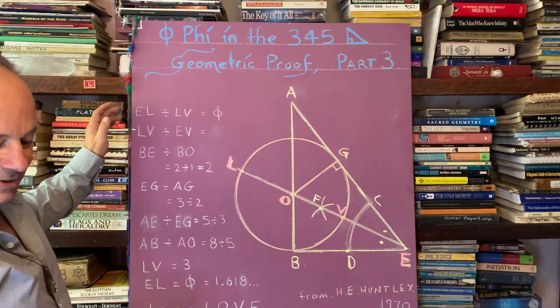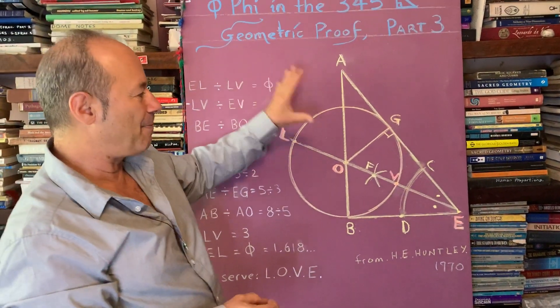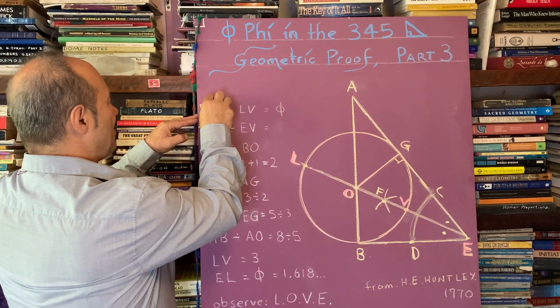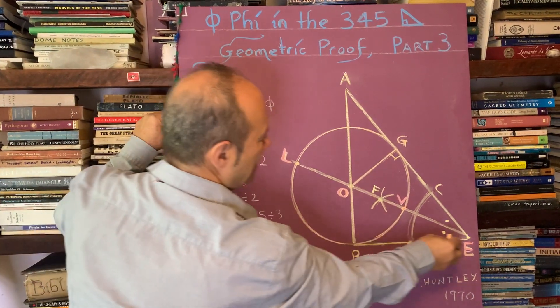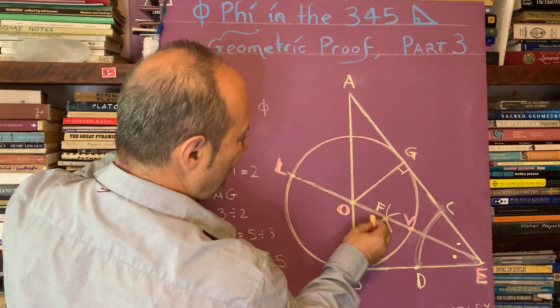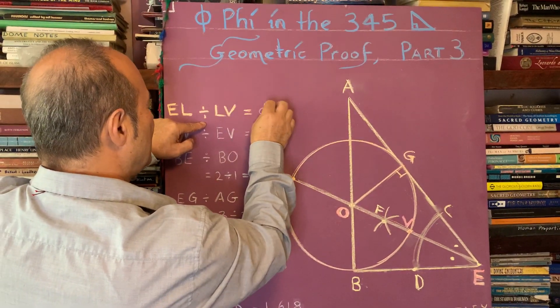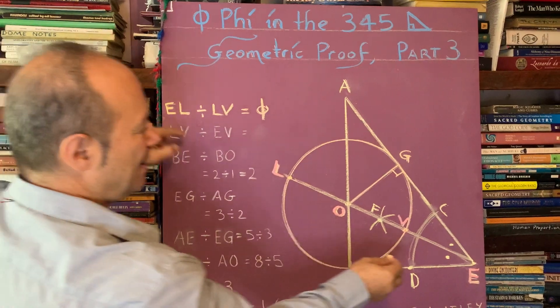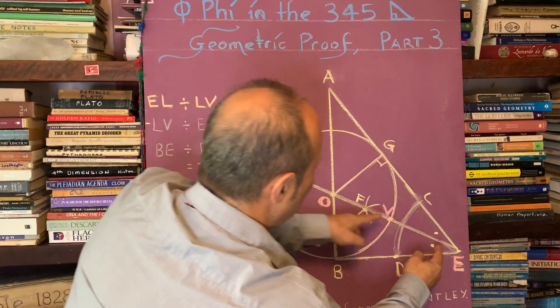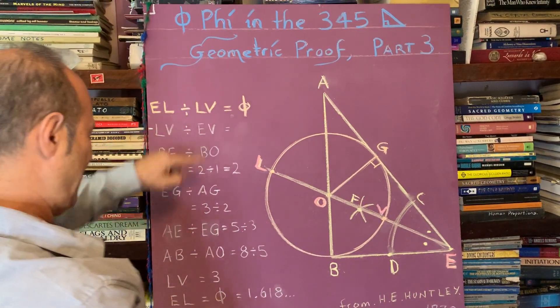I'd like to show you the facts, the mathematical proportions that are contained in here. E-L, the long line E-L divided by L-V, divided by the diameter of the circle, is the golden ratio. I'll repeat that again, because that's the main thing. The long line E-L divided by the diameter of the circle. So this to that is the golden ratio, 1.618.